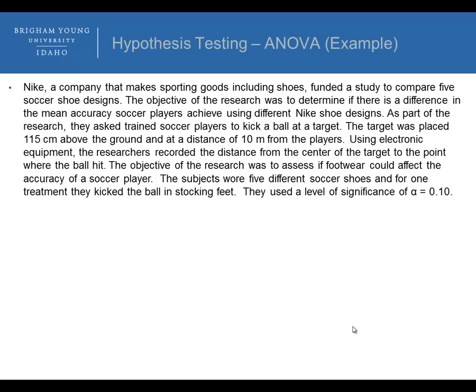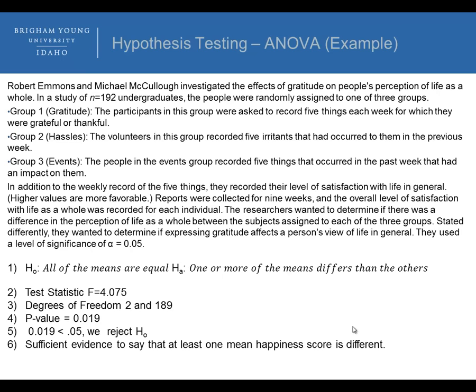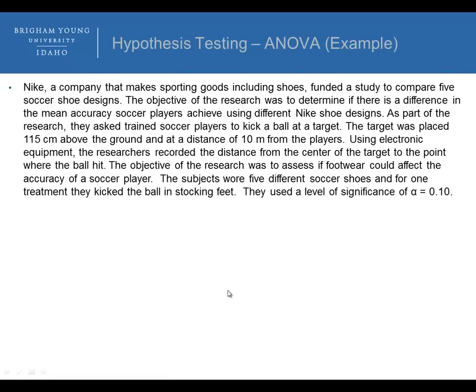The objective of the research was to assess the footwear that could affect the accuracy of a soccer player. The subjects wore five different soccer shoes, and for one treatment they kicked the ball in stocking feet. And they used a level of significance of alpha equal to 0.10. So what I'd like for you to do is to stop the video and go through this problem. The link to the data is on the online textbook. And go through the six steps, the same six steps that we did here in this previous problem.